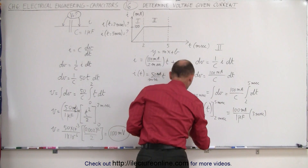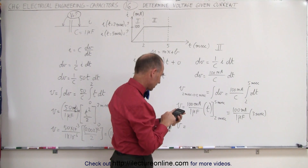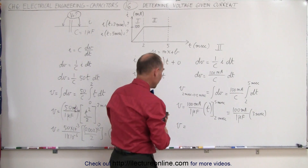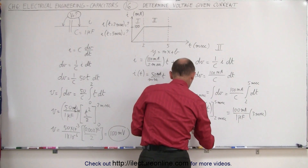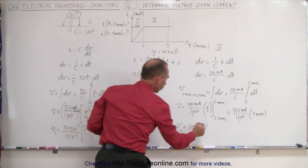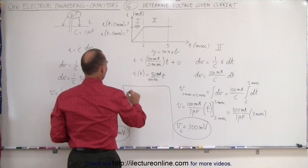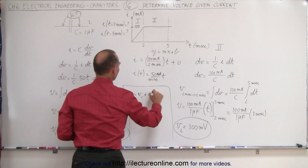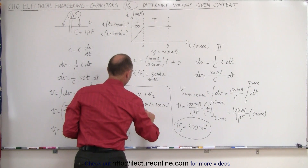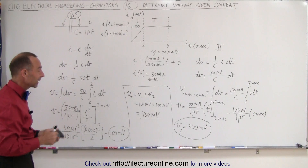The voltage added to the capacitor between 2 and 5 milliseconds equals 100 times 10 to the minus 3 divided by 1 times 10 to the minus 6, times 3 times 10 to the minus 3, which equals 300 millivolts. So the total voltage after 5 milliseconds is V_total = V1 + V2 = 100 millivolts plus 300 millivolts, for a total of 400 millivolts across the capacitor after 5 milliseconds.